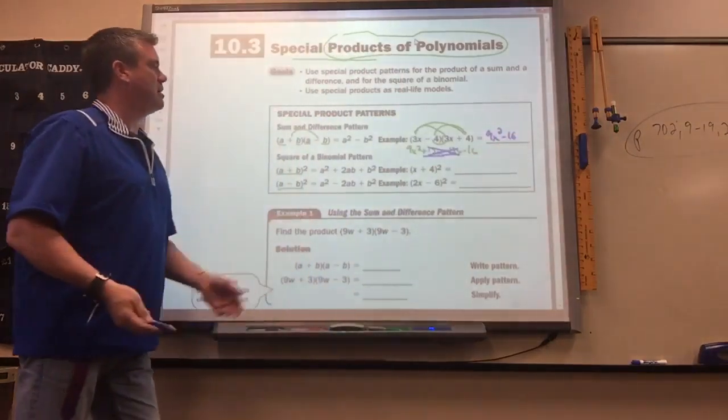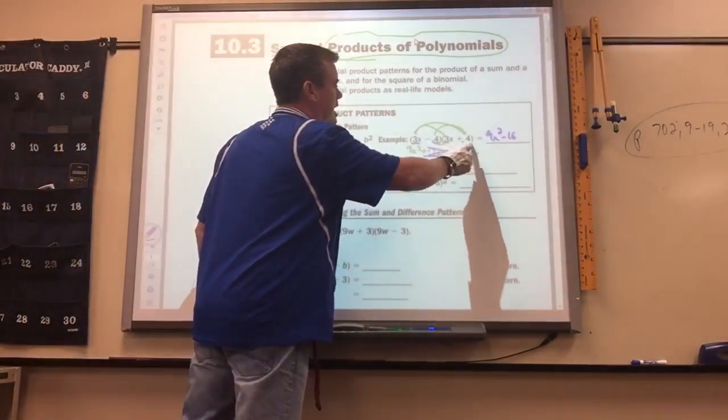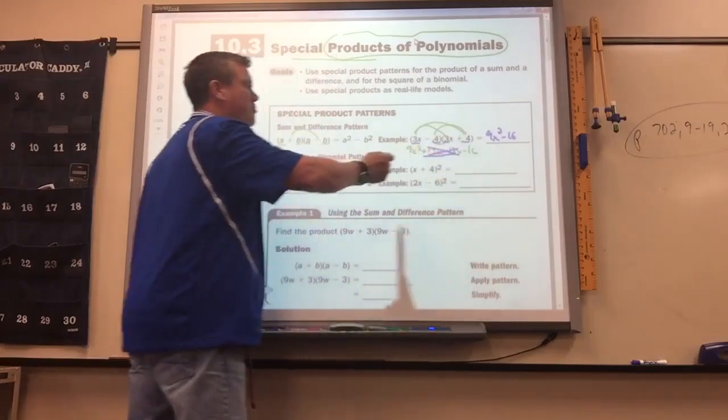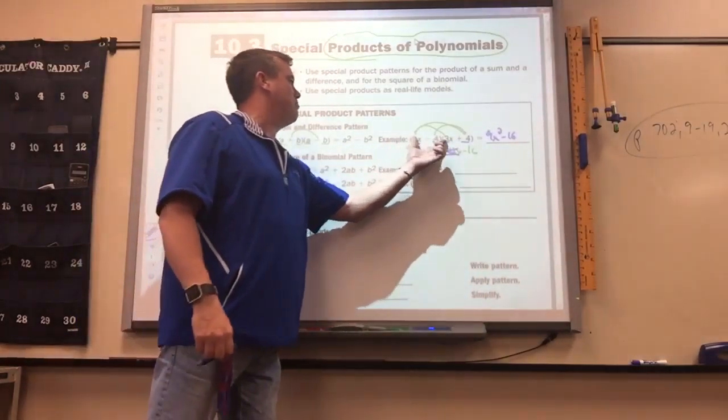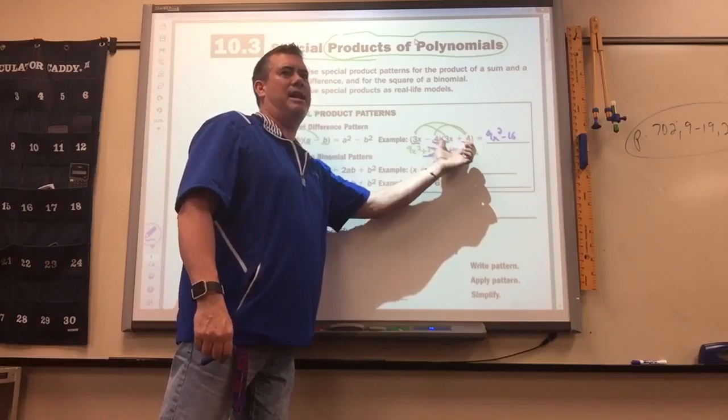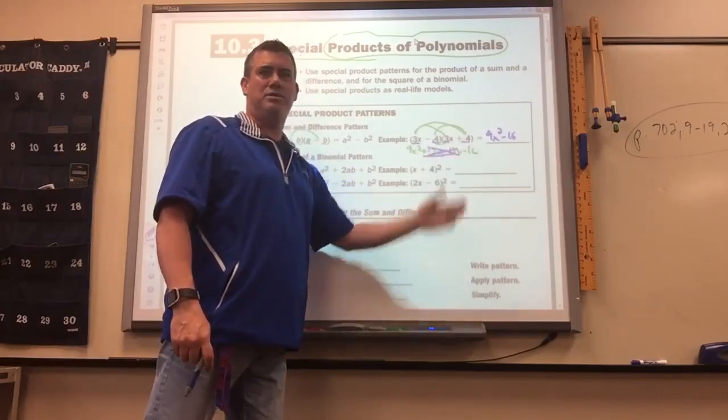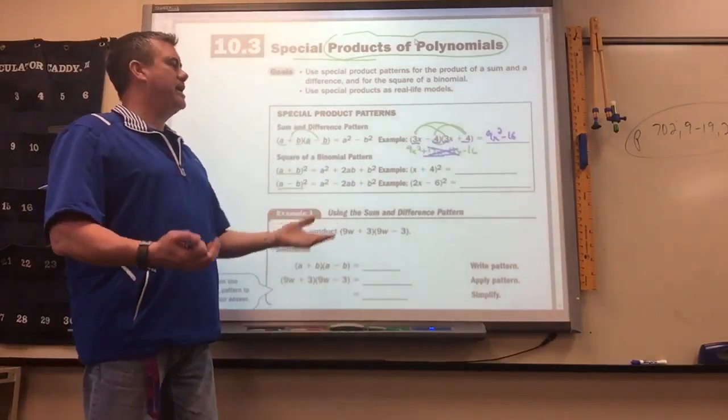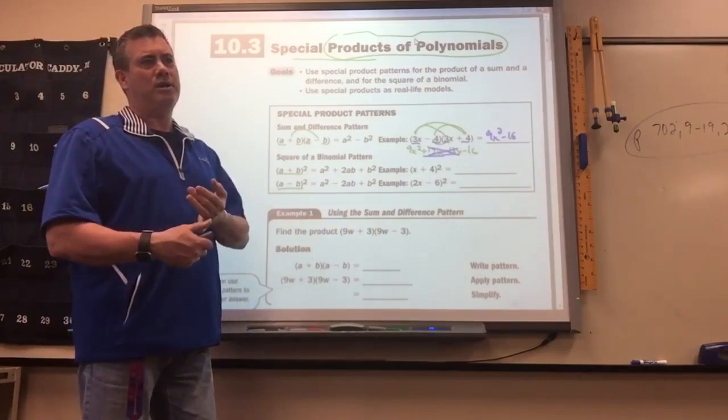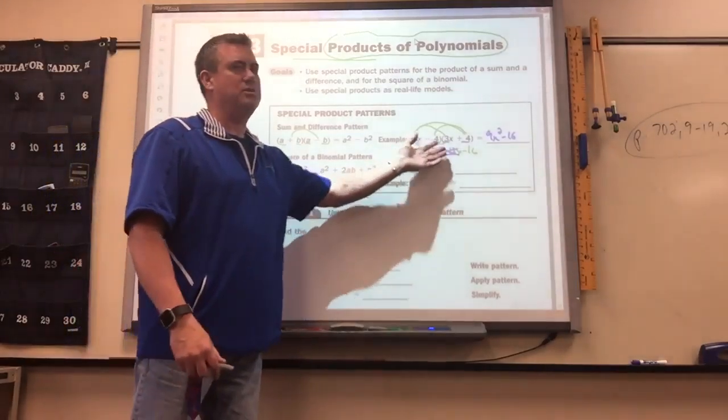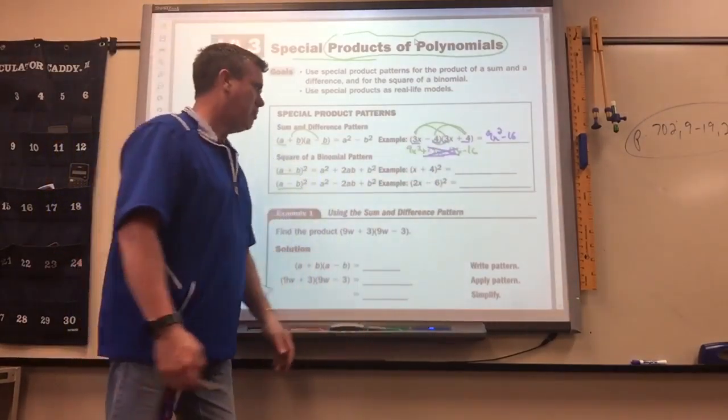So you're left just with 9x squared minus 16. So that's the shortcut. If you ever have the same two numbers times but the signs are different, really all you've got to do is the first times the first and the last times the last, because the two middle ones are always going to cancel. So again, if you remember that, it makes it quicker. If you don't, no big deal because you can just solve it normally.